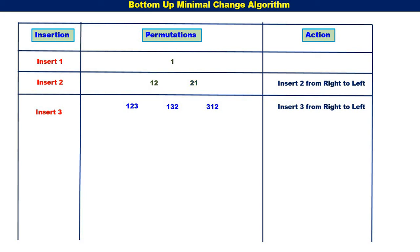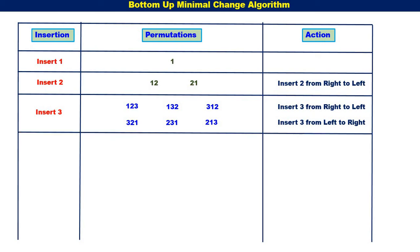Next, we shall consider {2, 1}. For {2, 1}, it is left to right. So first we insert 3 to the left of {2, 1}, that is we get {3, 2, 1}. Then {2, 3, 1}. Then {2, 1, 3}. So 3 was inserted from left to right in the permutation {2, 1}. We get 6 permutations total.